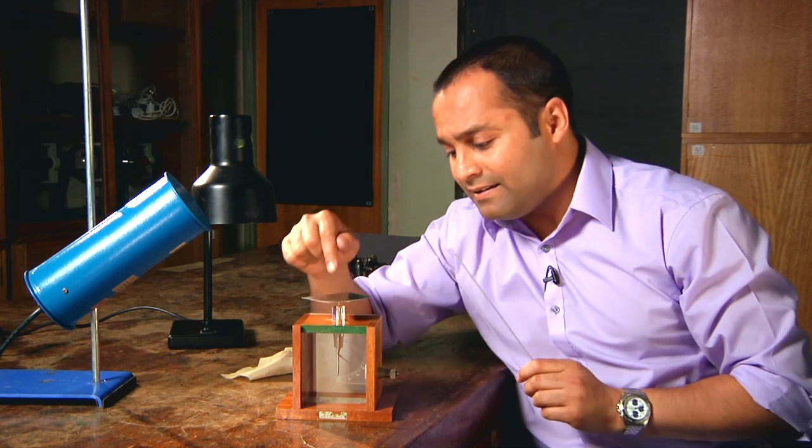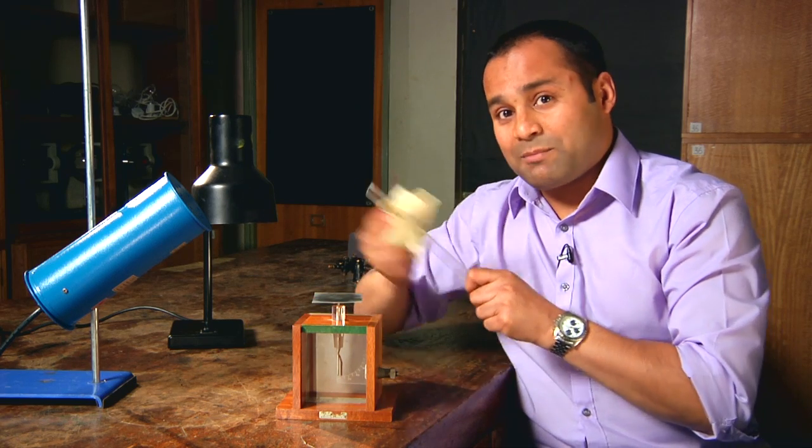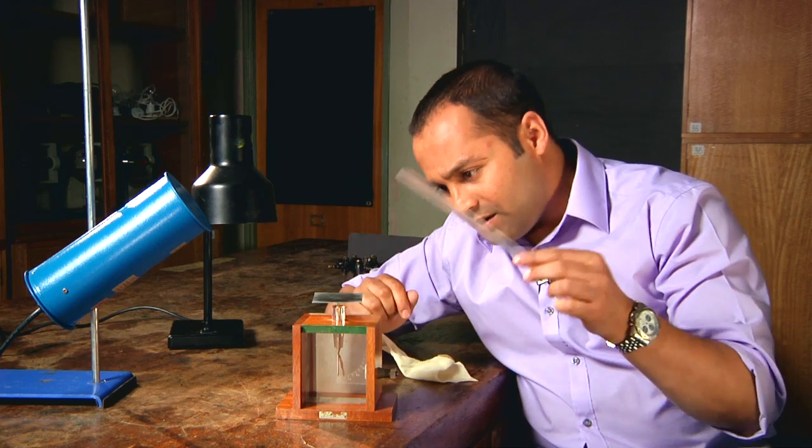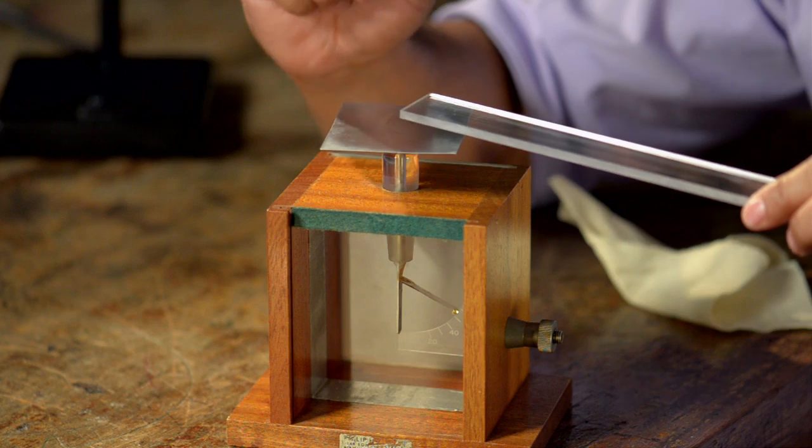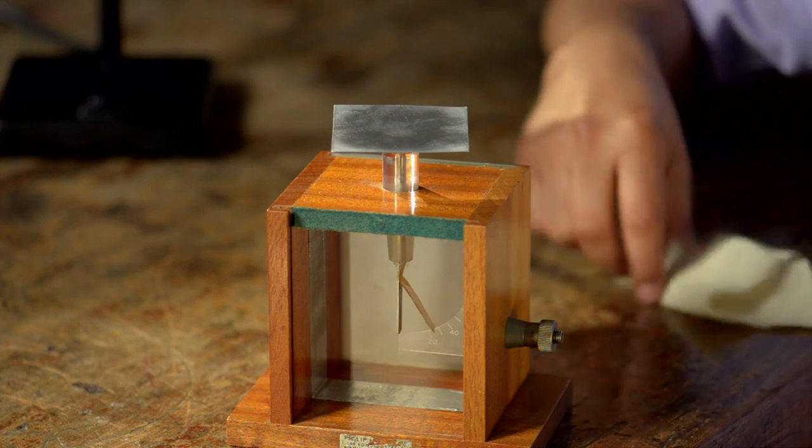Now let me show you that again. I've got a Perspex rod here, which I can make positively charged by rubbing with this bit of cloth. I bring the rod close to the plate, touch the plate with my finger, remove my finger, then remove the rod.